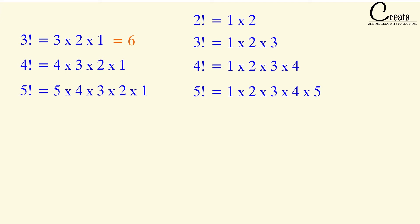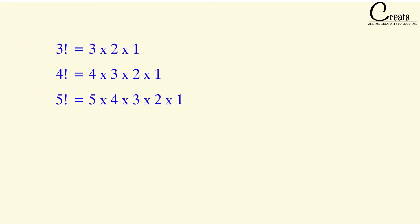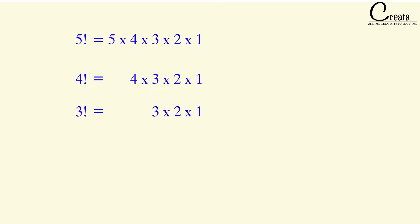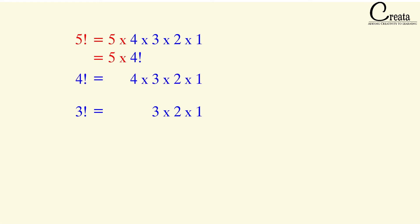Let's observe the factorial in further detail and rearrange them. 5 factorial is equal to 5 into 4 into 3 into 2 into 1. Here, can we replace 4 into 3 into 2 into 1 with 4 factorial? Yes, we can. So we can rewrite 5 factorial as 5 into 4 factorial. Simple mathematics — we have just rearranged the numbers.